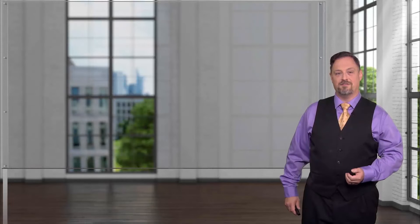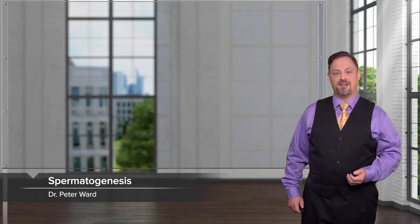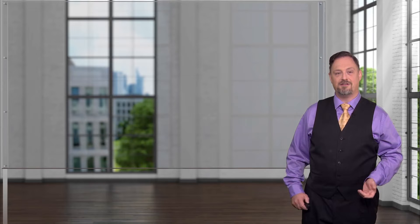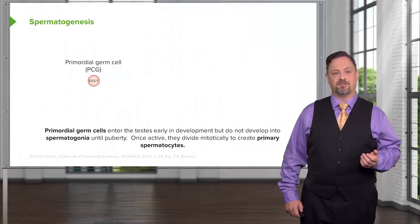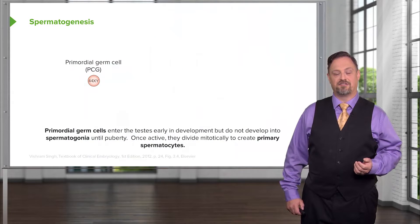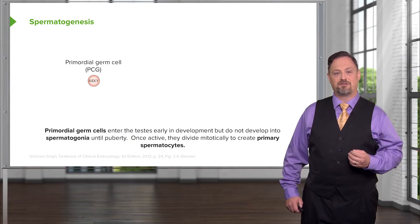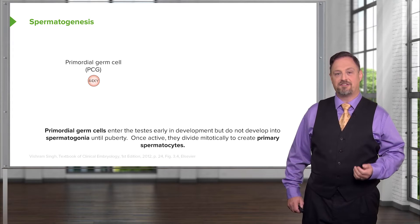We will now continue our discussion of germ cell development by looking at spermatogenesis and oogenesis, which produce germ cells that are capable of fertilizing and being fertilized. The primordial germ cells involved in spermatogenesis move into the testes very early but do not become capable of fertilizing until well after puberty, when spermatogonia become active, divide, and produce more primary spermatocytes.